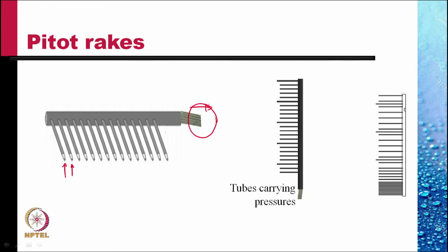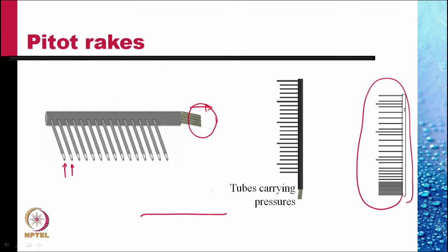There are various arrangements for these tubes. For example, this rake could be used to measure the velocity profile across a boundary layer. When we have a wall, a boundary layer develops on it, and the velocity changes very fast near the wall and rather slowly farther away. So this rake allows us to pick up the velocity at very close points near the wall and at points far away from the wall.